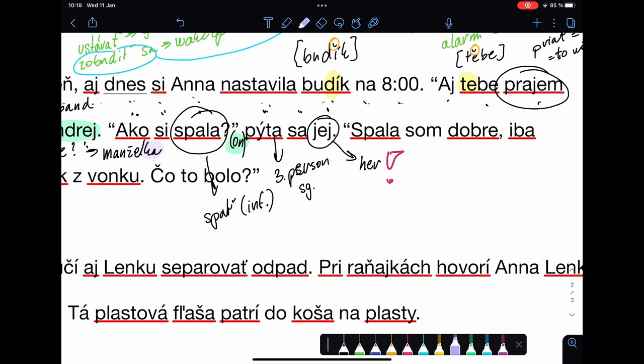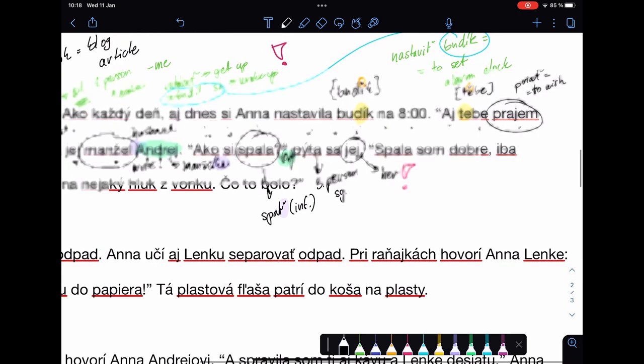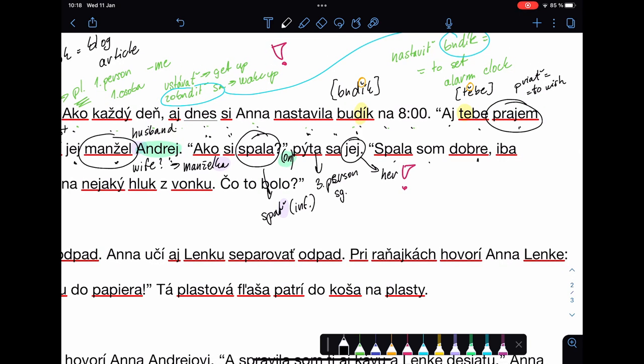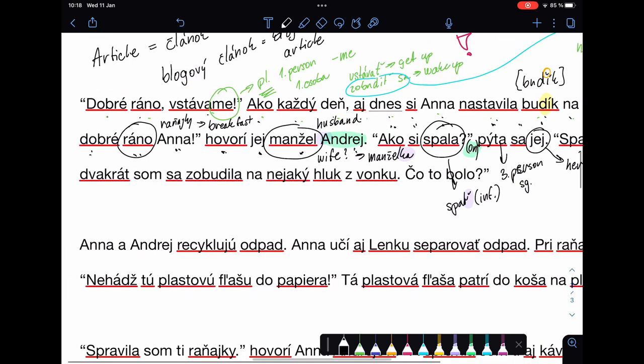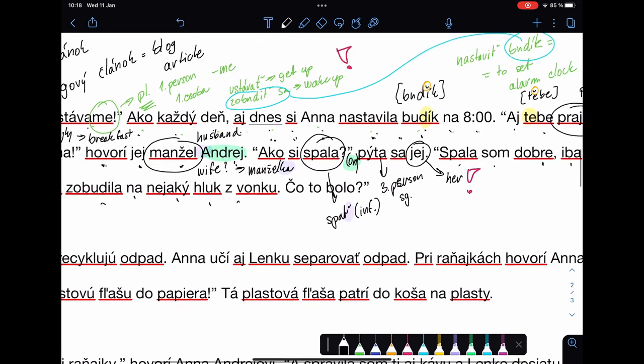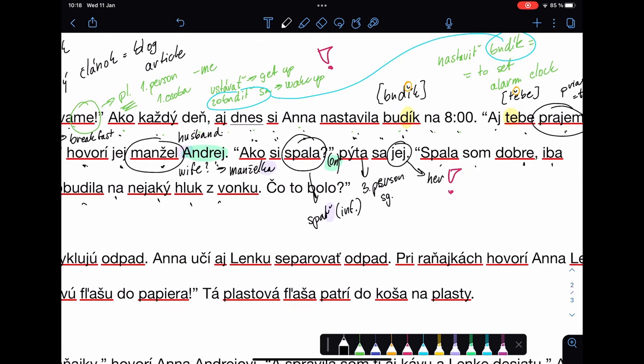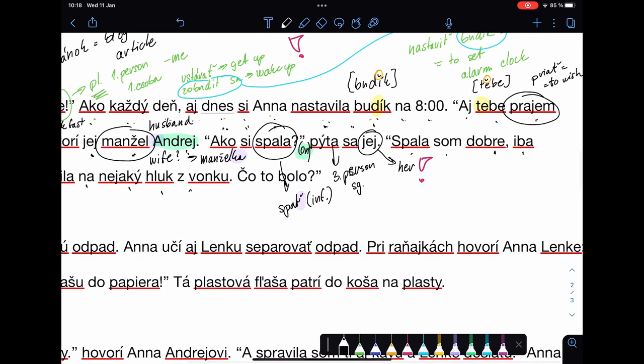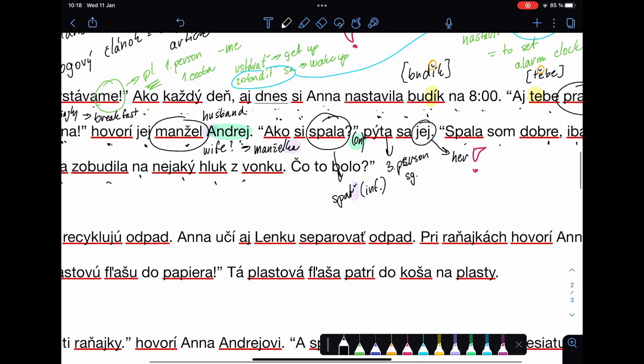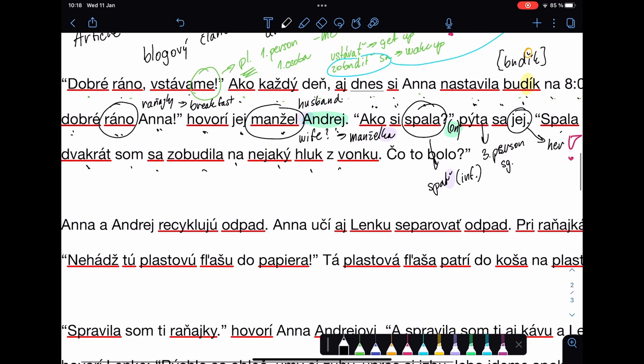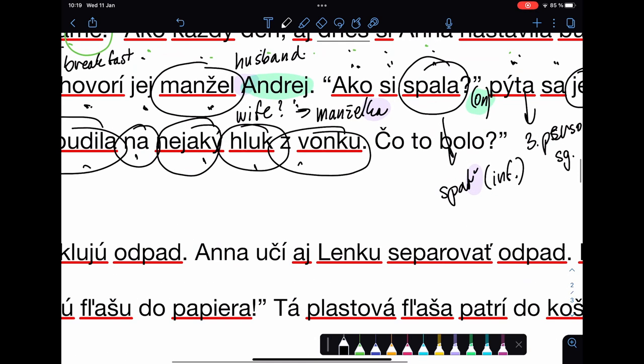Every time when there's ť, that's infinite form. Spala som dobre. I slept well. Iba dvakrát som sa zobudila na nejaký hluk zvonku. I slept well. Nevertheless or only - that's iba. I woke up two times on some noise from outside.